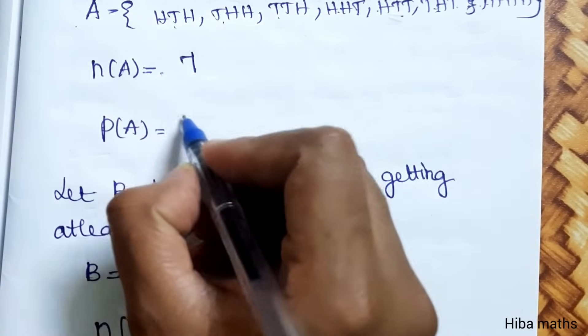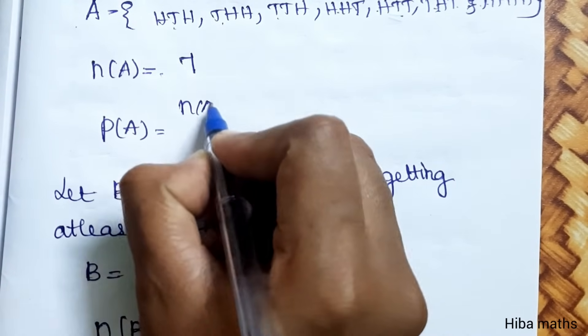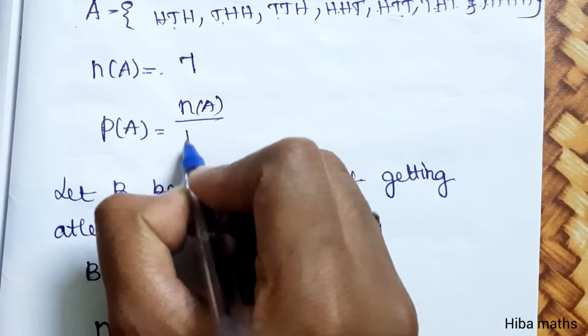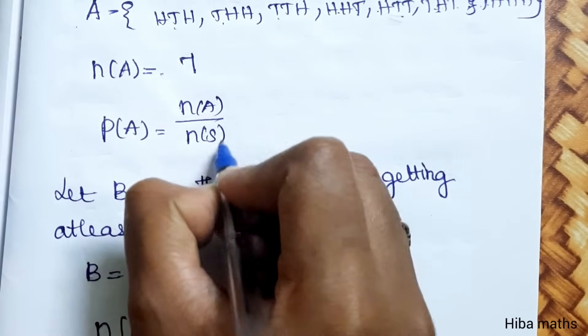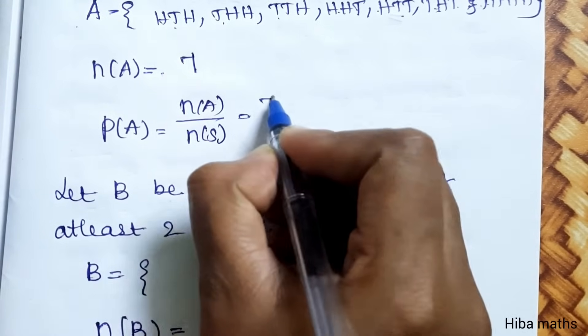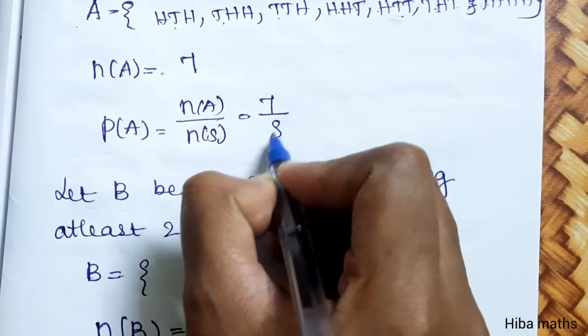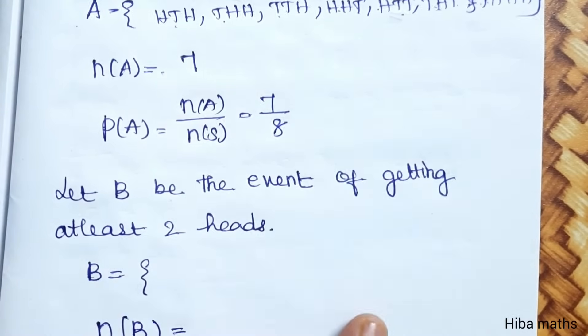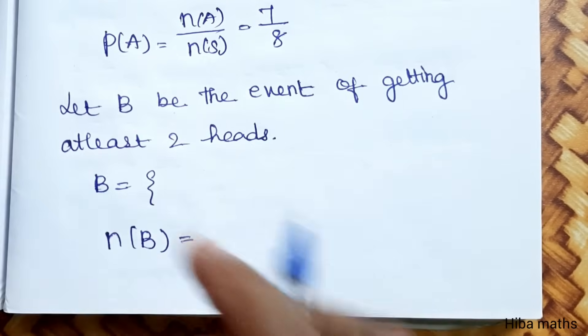Now, P(A) equals N(A) divided by N(S), which is 7 by 8. So P(A) = 7/8.